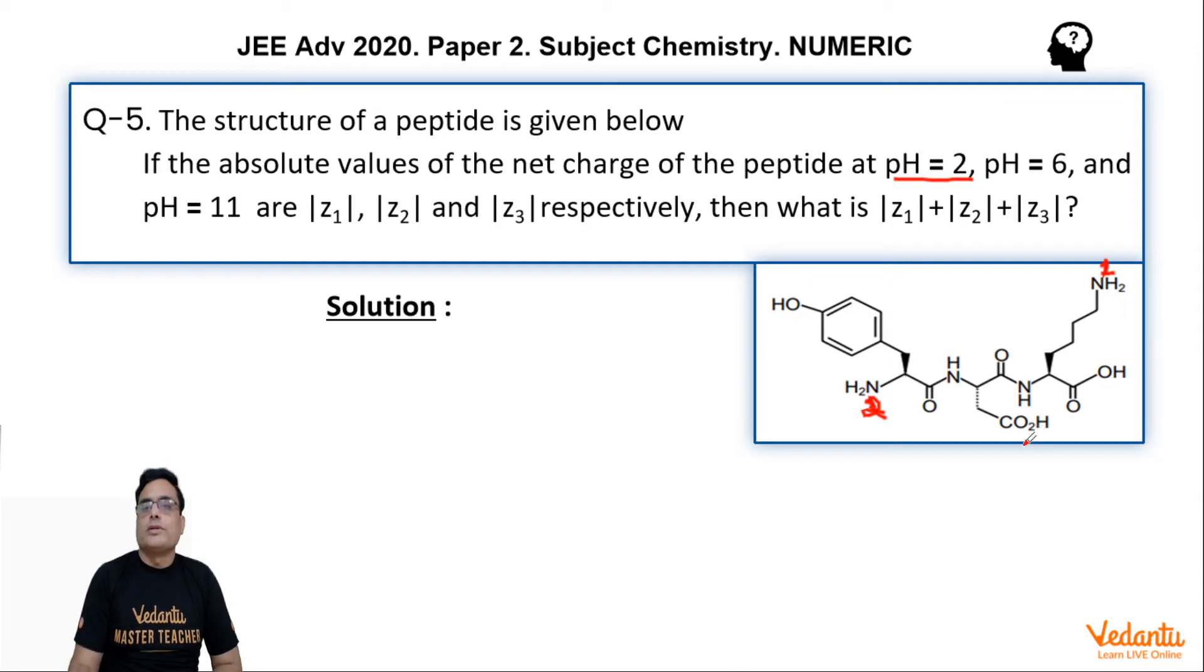This is COOH here and one COOH here also from the lysine part. At pH equal to 2, which is highly acidic pH, both the NH2 groups will get protonated. NH2 number 1 and NH2 number 2, both these groups will be protonated - plus 1 charge for each. So mod z1 is equal to 2. That's very simple.